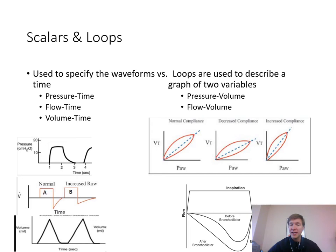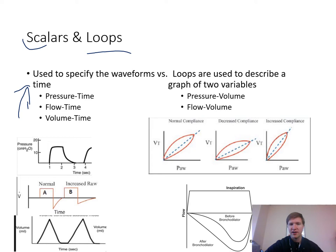So let's start with the basic ones. There are two terms: scalars and loops. A scalar is anything compared to time. So a pressure-time scalar has time on the x-axis and pressure on the vertical y-axis. There's your flow-time scalar, where time is on the x-axis and flow is vertical — inspiratory flow rate is above and expiratory flow rate is below. Finally, there's your volume-time scalar where volume is on the vertical y-axis.